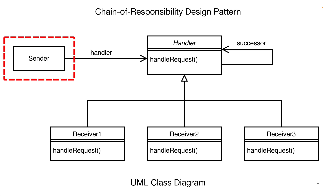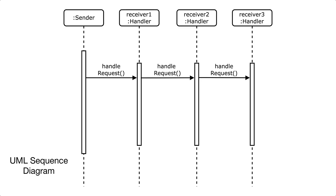We can then imagine that we have a sender object that sends a request to the first handler object in the chain. The handler objects will then handle the request and pass the request along to the next handler in the chain. In some versions of the pattern, the first object in the chain that is able to handle the request will not pass it along to the next object. In other versions of the pattern, even if an object in the chain is able to handle the request, the request is still passed along to the next object in the chain.